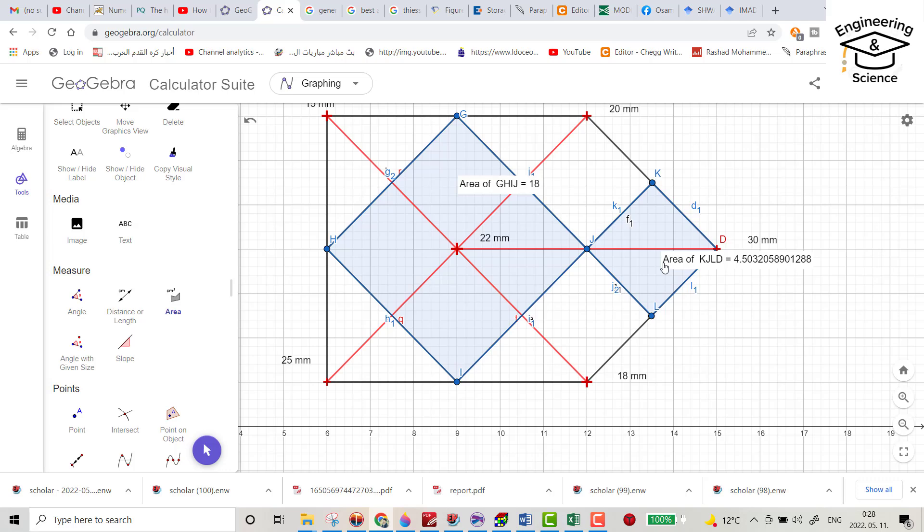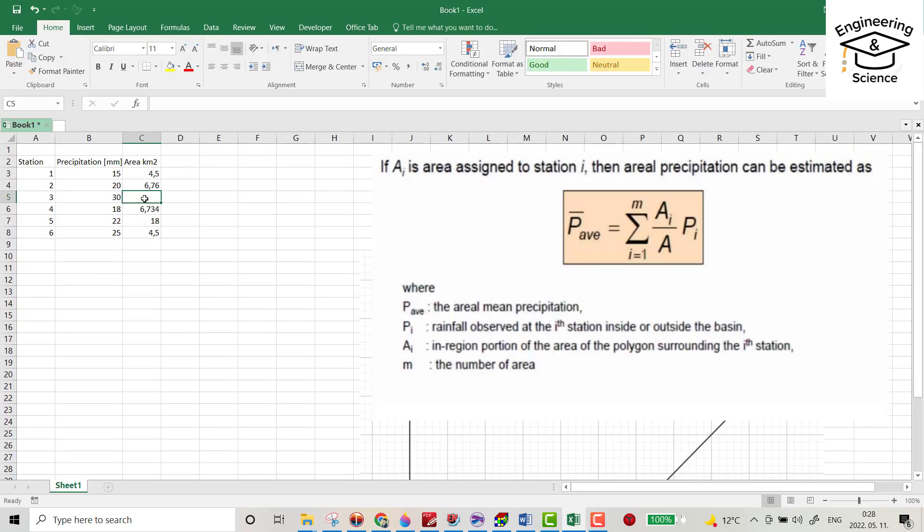Now we have this equation, the Thiessen polygon equation: area for each station multiplied by precipitation divided by total area. So total area equals autosum, equals 44.9. Maybe the exact area is 45, but there's error from creating lines and polygons, it's not so important.